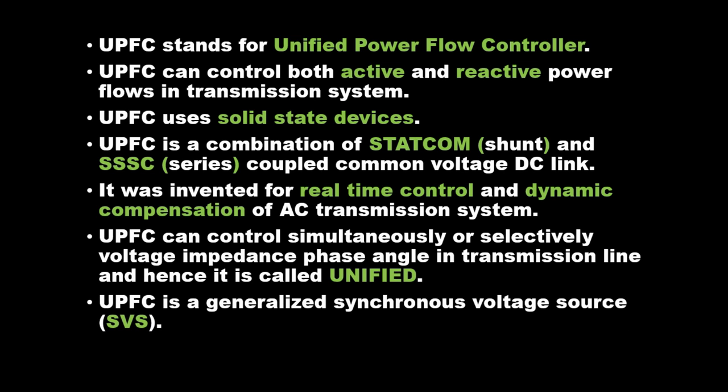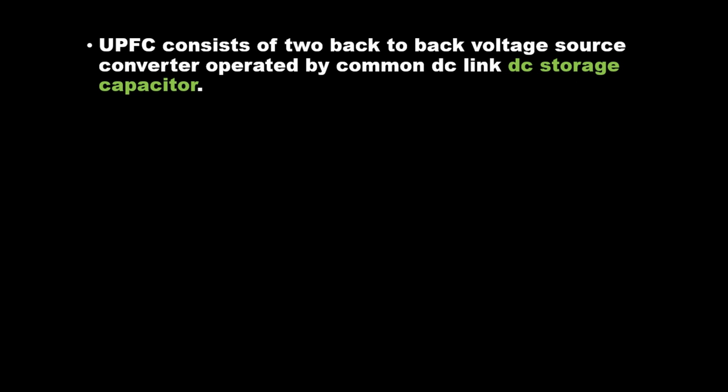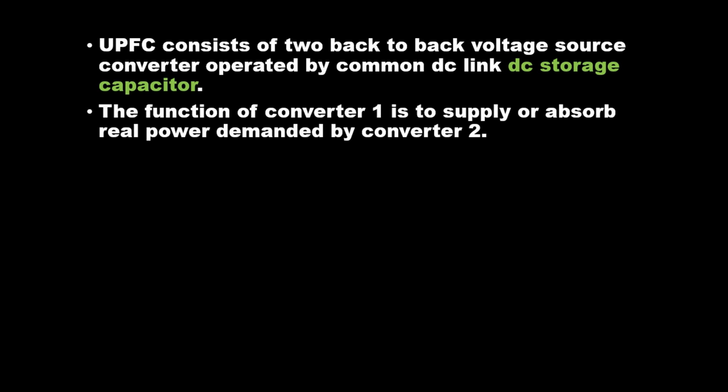UPFC is a generalized synchronous voltage source. UPFC consists of two back-to-back voltage source converters operated by a common DC link DC storage capacitor. The function of converter 1 is to supply or absorb real power demanded by converter 2.